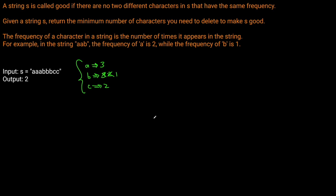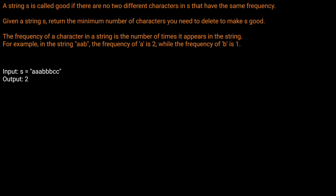Intuitively this makes sense, but how do we actually solve this problem using code? One of the first things we did was create a dictionary of our counts, which is useful because we want to know the count of each character so we can access it quickly. So one of the first things we want to do is create a dictionary that keeps track of the count of each character.